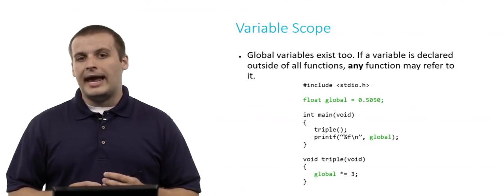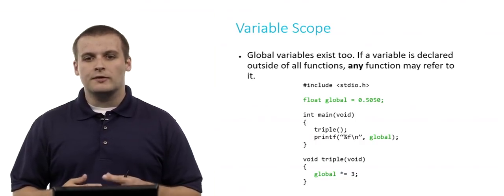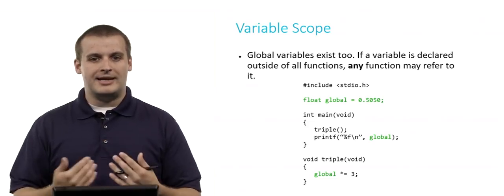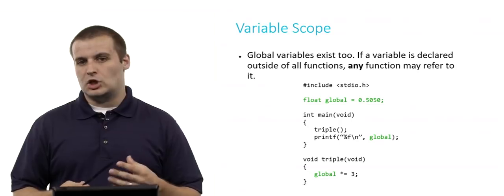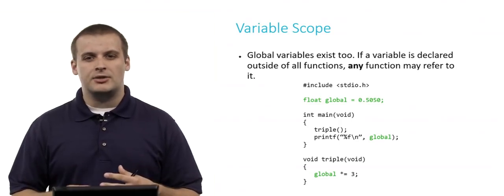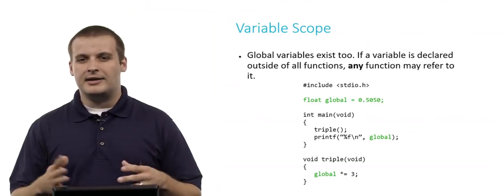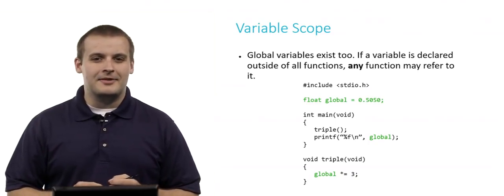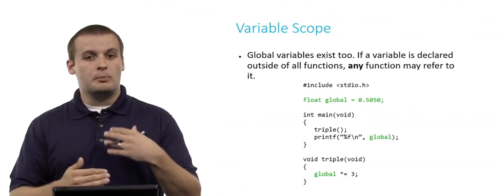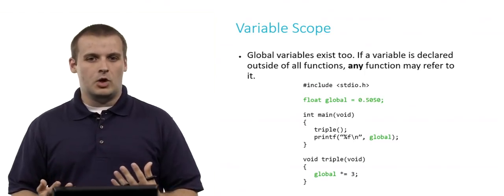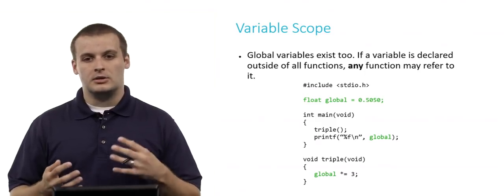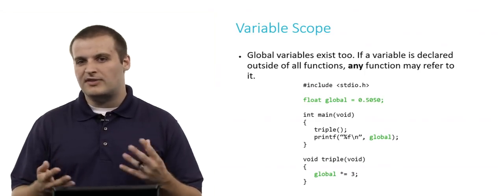You'll notice that in main and in triple, I am able to refer to global. And in fact, if I go through the program as indicated, main first calls triple, triple multiplies global by 3, which sets its value to 1.51 or something like that. And then main also prints out the value of global. So main will not print out .5050. It will print out global times 3, 1.51.